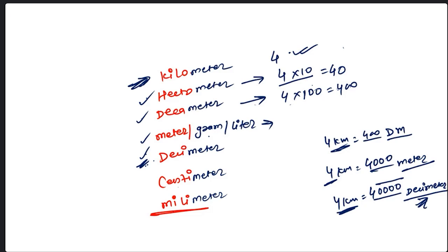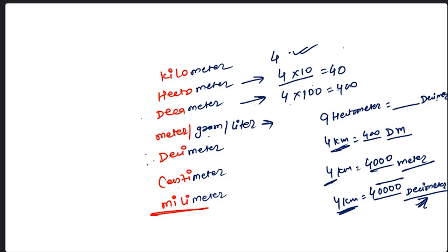Next question: 9 hectometers equal to how many decimeters? We are at hectometer and have to reach decimeter. Find the difference: 1, 2, 3 — there is a 3-step difference. So put three zeros after 9. The answer is 9000.